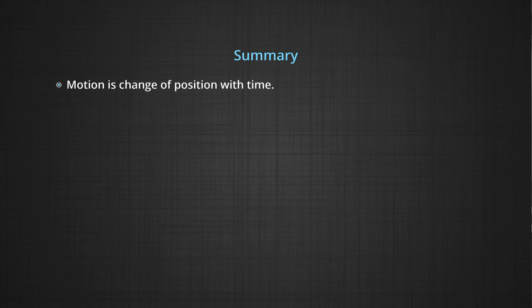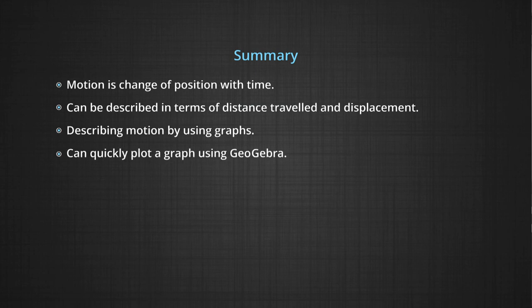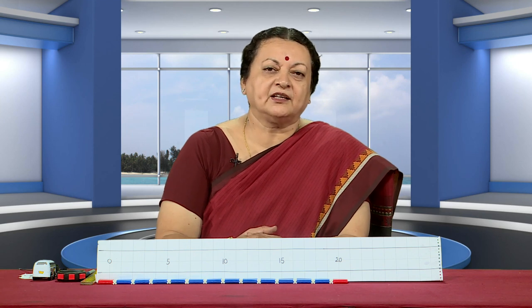So we have learnt: motion is change of position with time. Motion can be talked of in terms of distance traveled and displacement, and time is important. You can describe motion by using graphs. You can quickly plot a graph using GeoGebra, plotting both distance and displacement-time graphs at the same time as we did in the case of the drunkard. We get a sense of the position of the body as it changes with time. To completely talk about the motion of an object, we have to talk about the position at different times, and therefore we can use graphs and symbols to represent the change in position and the time interval involved in it.